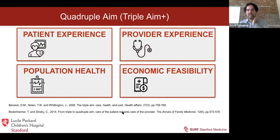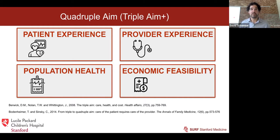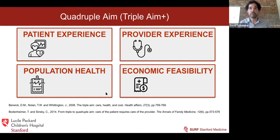The first key is to think about how projects will intersect each component of the quadruple aim. The triple aim said projects should focus on patient experience, population health, and economic feasibility. The quadruple aim extended this to explicitly focus on provider experience. You can't ask people to click more, look at another screen, open another piece of software, or learn another algorithm without adding to the burden, adding to burnout, adding to the problems that a lot of technology has caused. We want to make sure our projects have a clear impact or at least do no harm in each of these four areas.